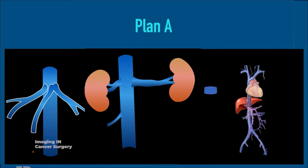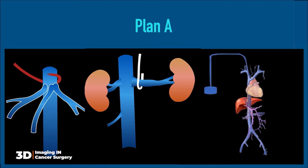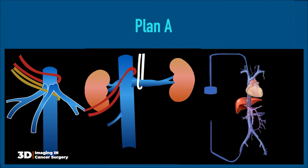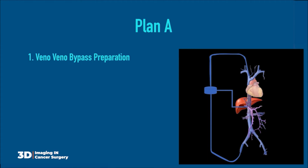For details, you can find the link in the description. Plan A started with the preparation of venous-venous bypass as illustrated here. When bleeding was encountered, tightening three ribbons can place patients on temporary heart and lung bypass and give surgeons the chance to fix the bleeding.